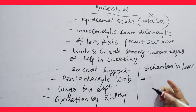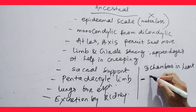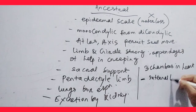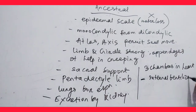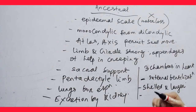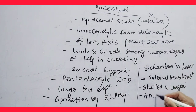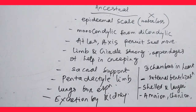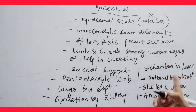Another important character is internal fertilization — internal fertilization takes place. The eggs are shelled and larger. Embryonic membranes are present: amnion, chorion, and allantois. These are called extra-embryonic membranes. These are the features for which the amphibians became Reptilia.